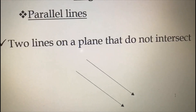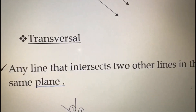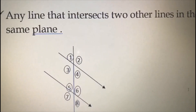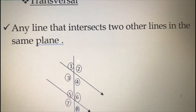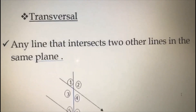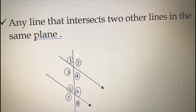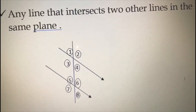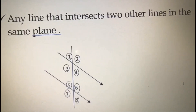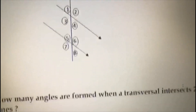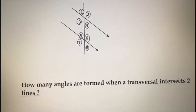The next one is transversal. If two parallel lines are there and any other line intersects these two lines, that is a transversal. You can see the figure — two lines are given and one line is being cut by those two lines. Any line that intersects two other lines in the same plane is a transversal.